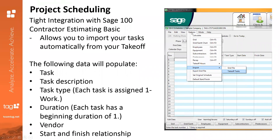As you can see on the right-hand side, you go up to Options, then Import, and you can bring over your takeoff tasks from there. All of the following data will populate: task, task description, the type, the duration, the vendor, and the start and finish of the relationship. You can then start building out more detail from there and really streamline the process between estimating and being awarded the job.